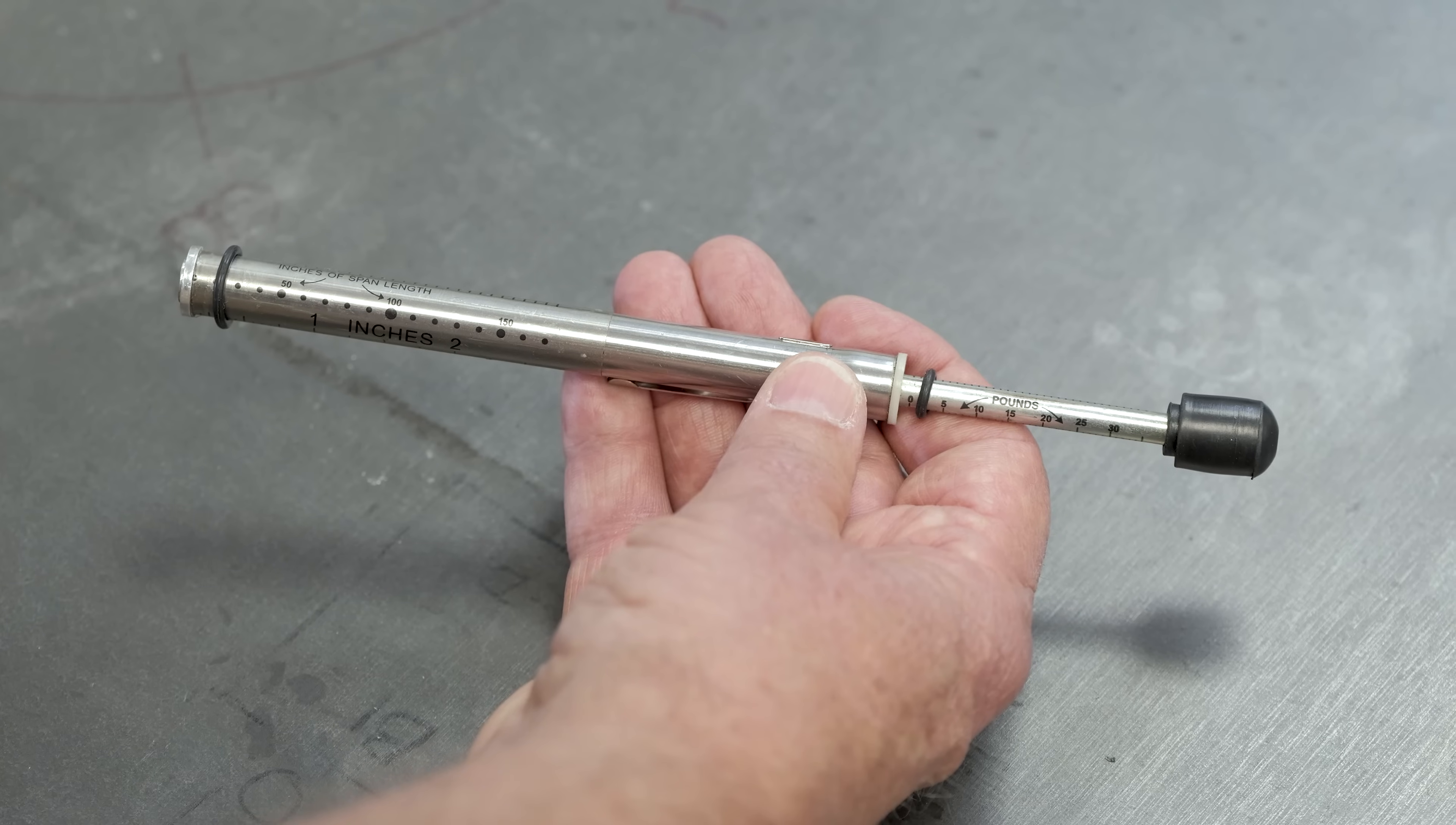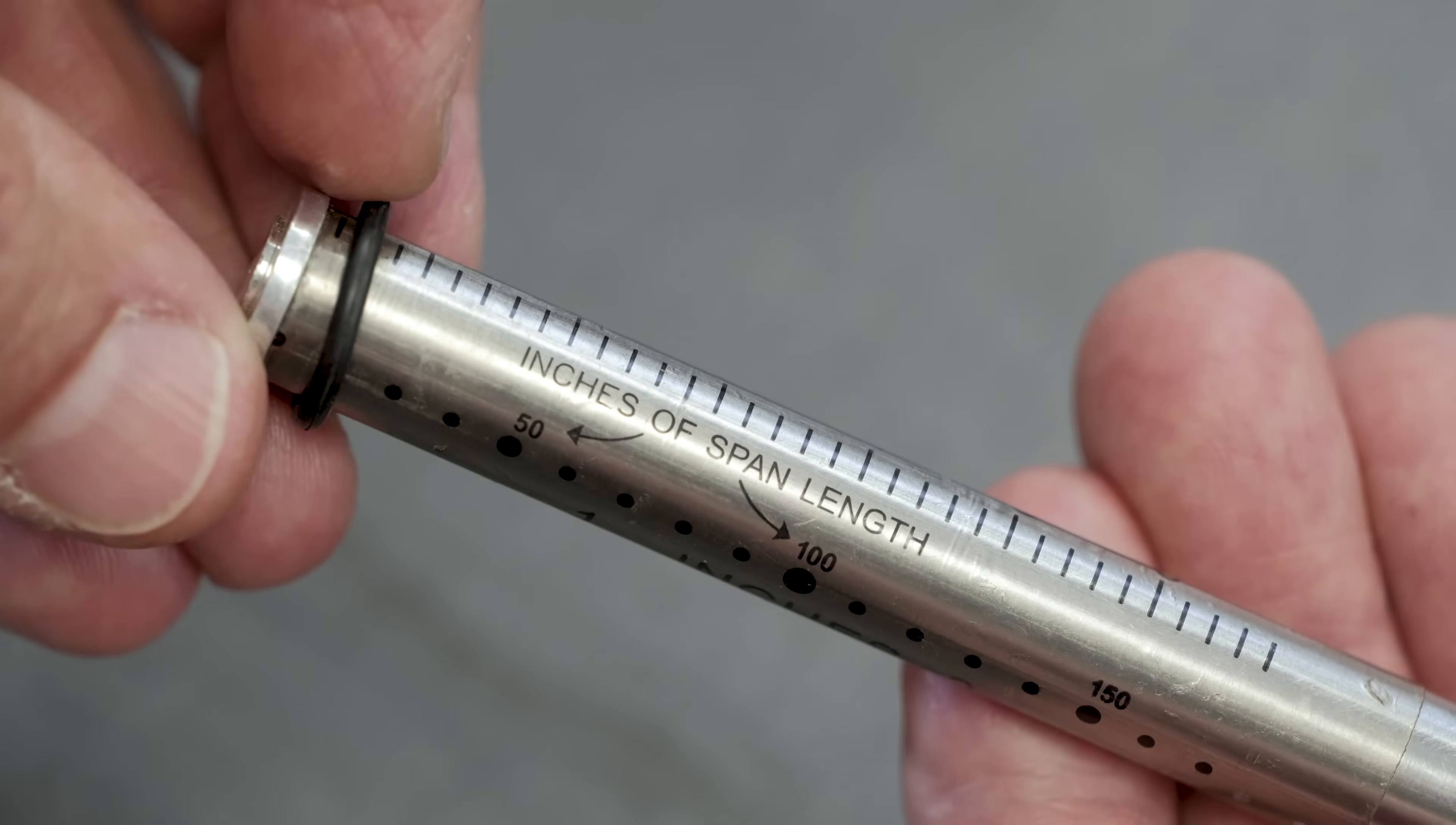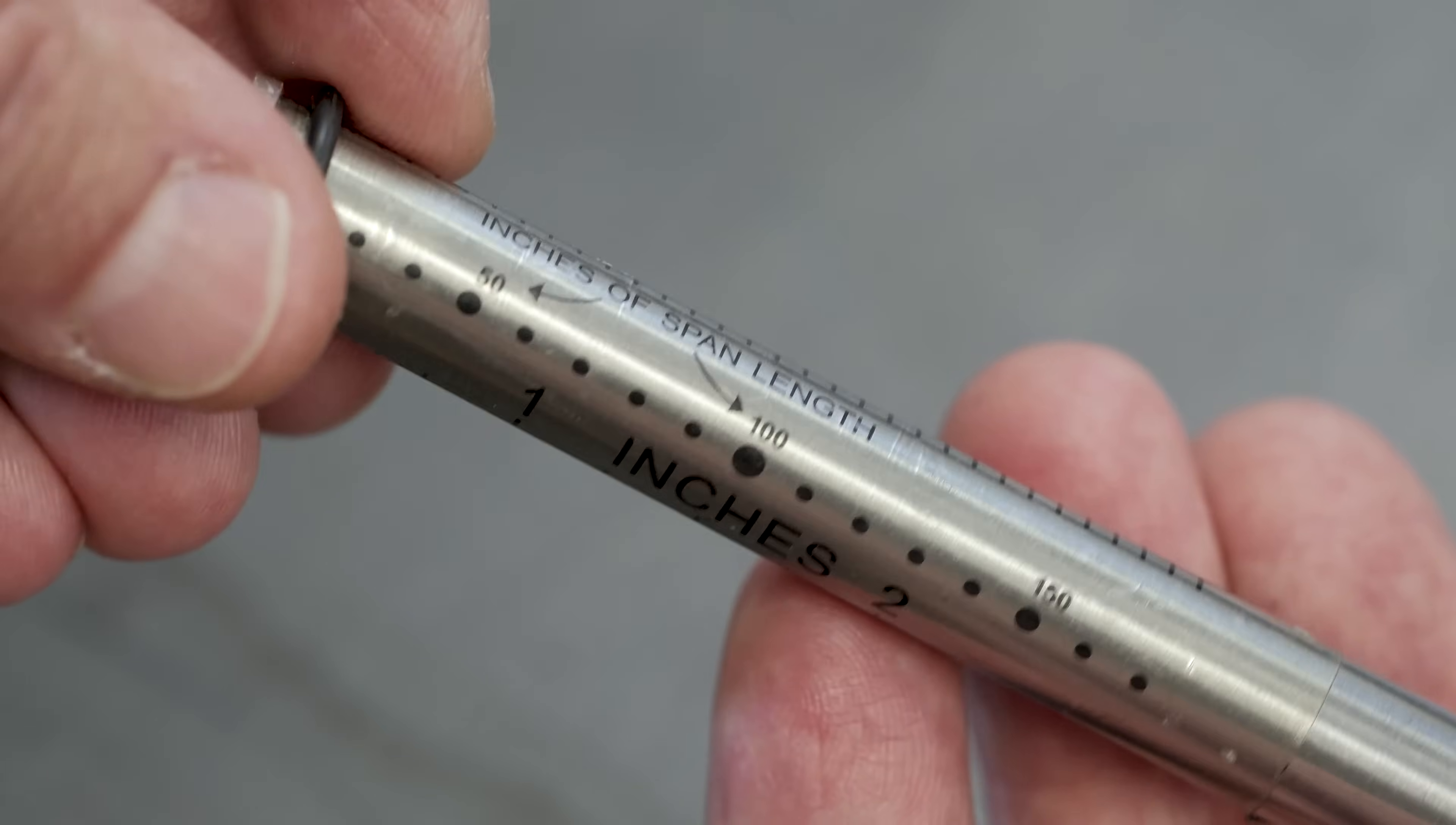Distance is measured here and there are a couple of different ways to do this. Using the large O-ring to set the amount of deflection in inches, I can use the inches scale if I know how much the belt is supposed to deflect. If you don't know that, you can also use this inches of span length.